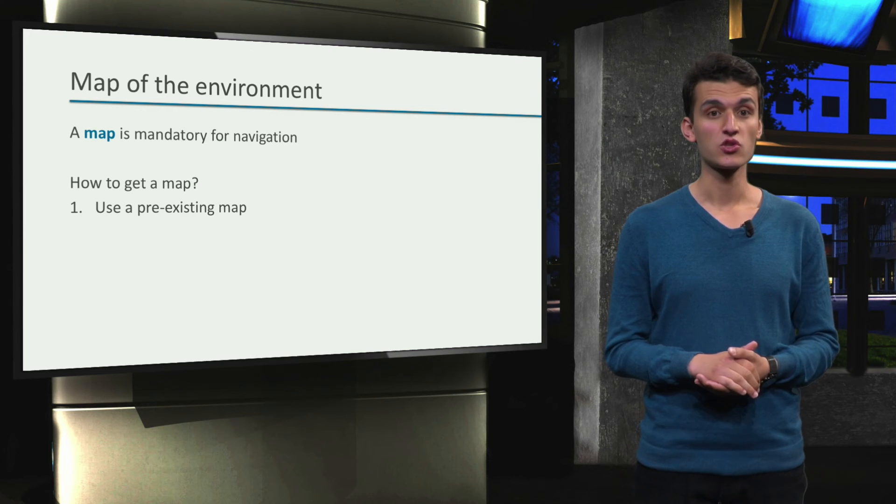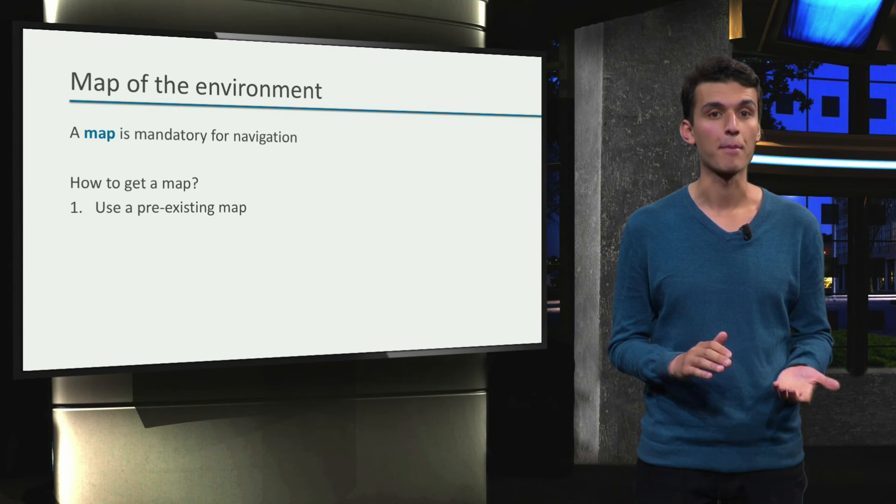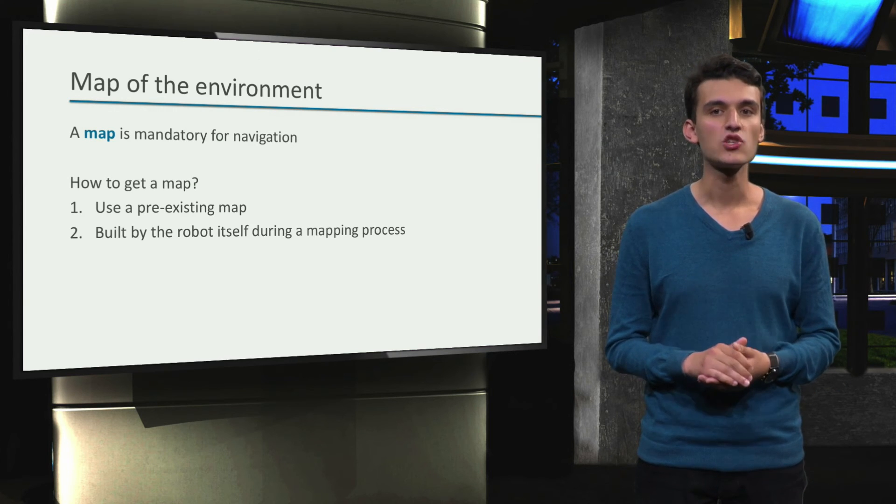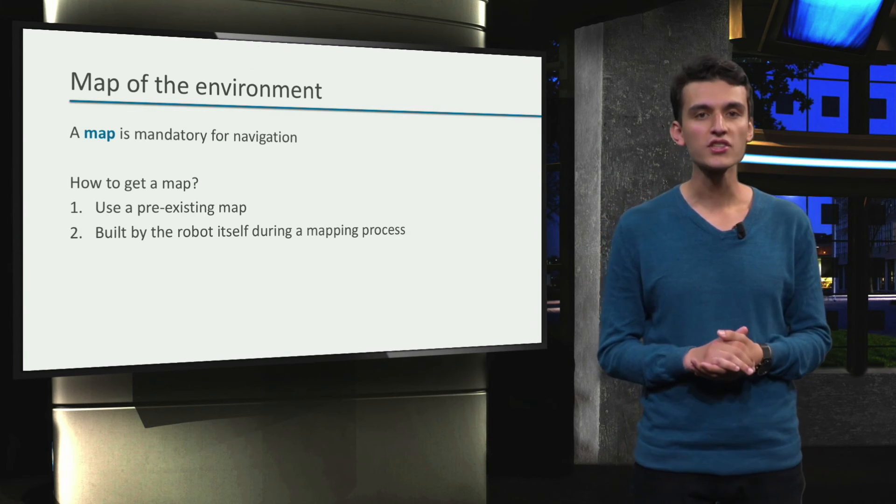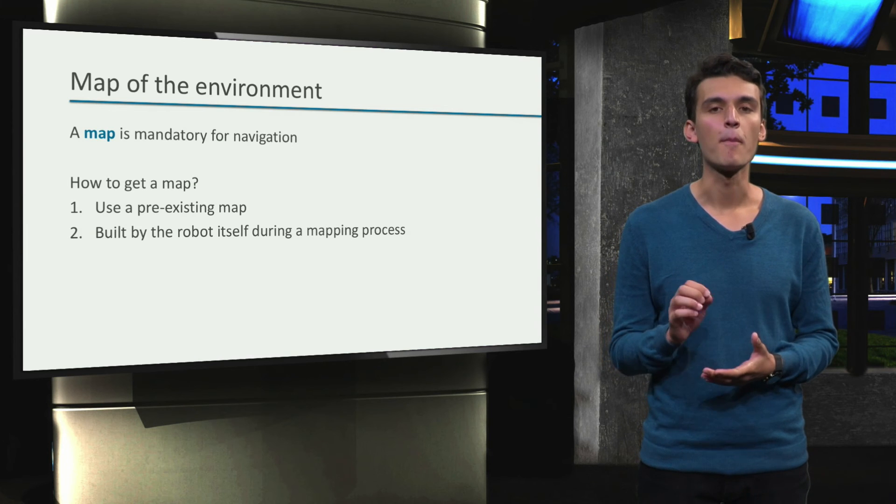In a lot of applications, we will not have a pre-existing map. In that case, we will have to create a map ourselves, using the robot of course. The process of creating a map is called mapping.